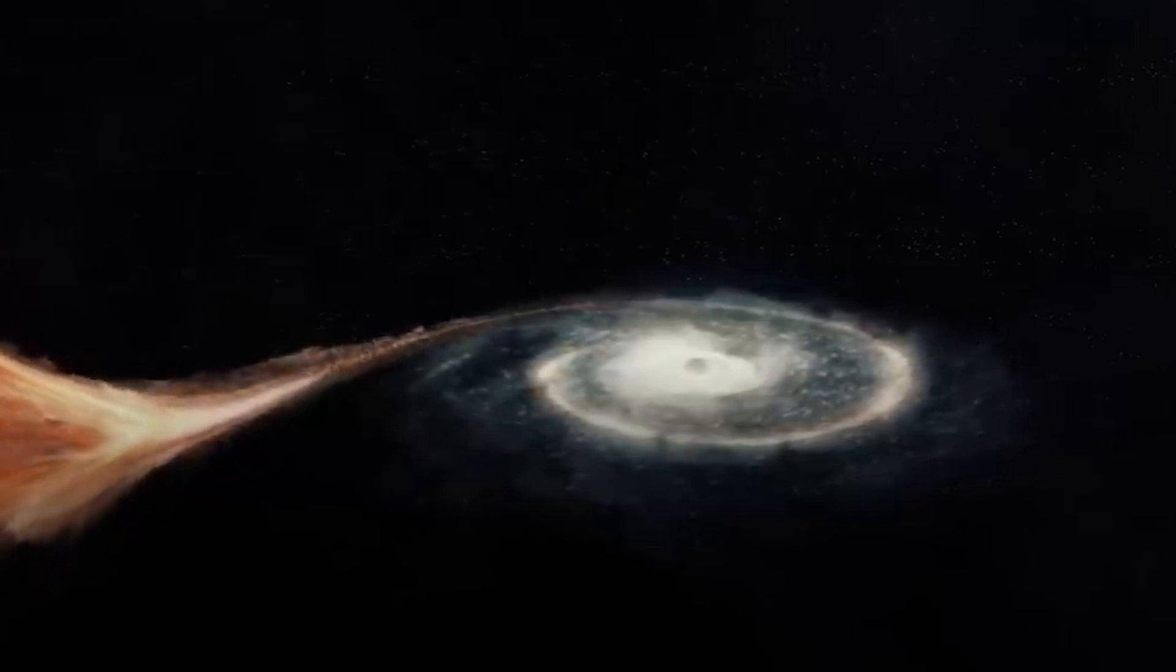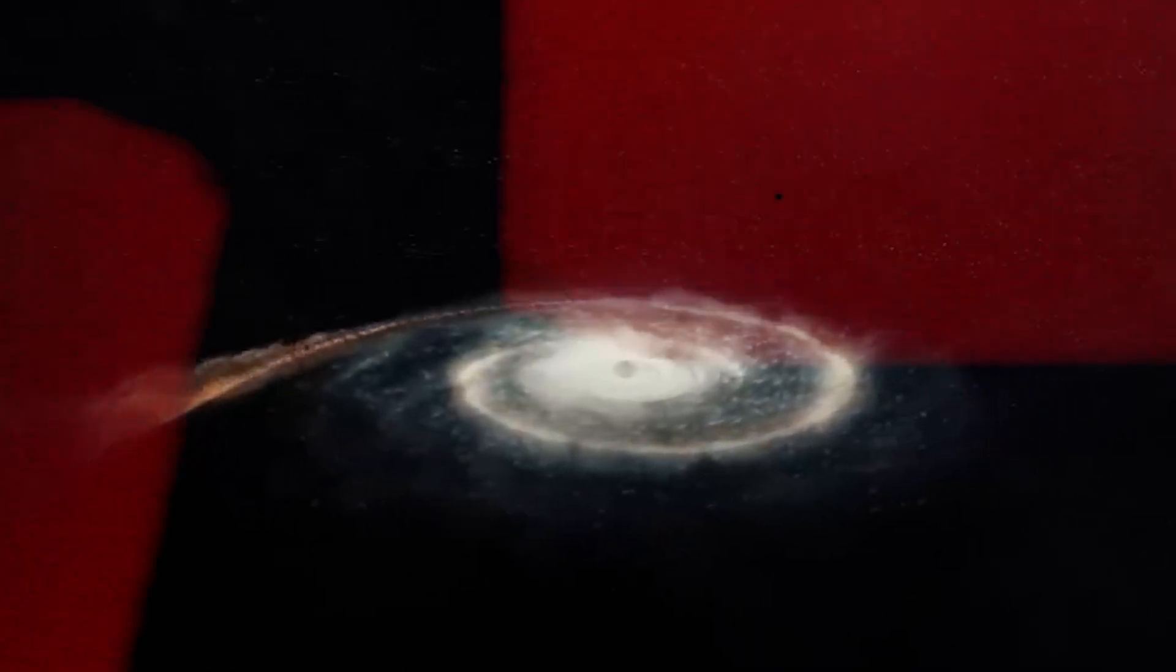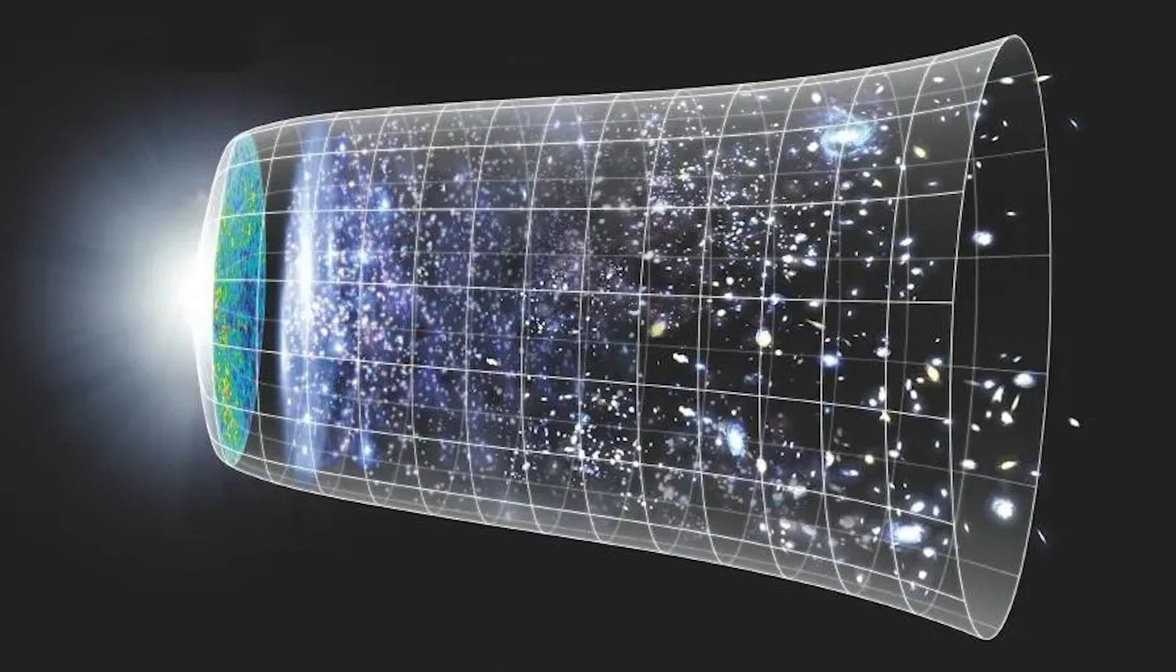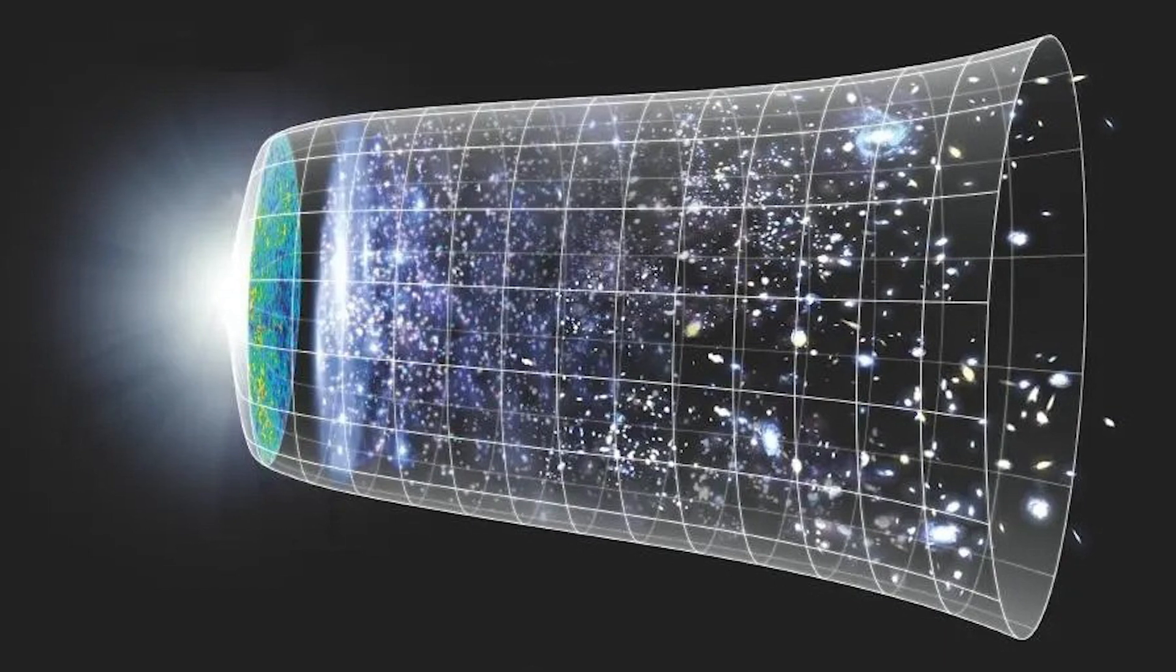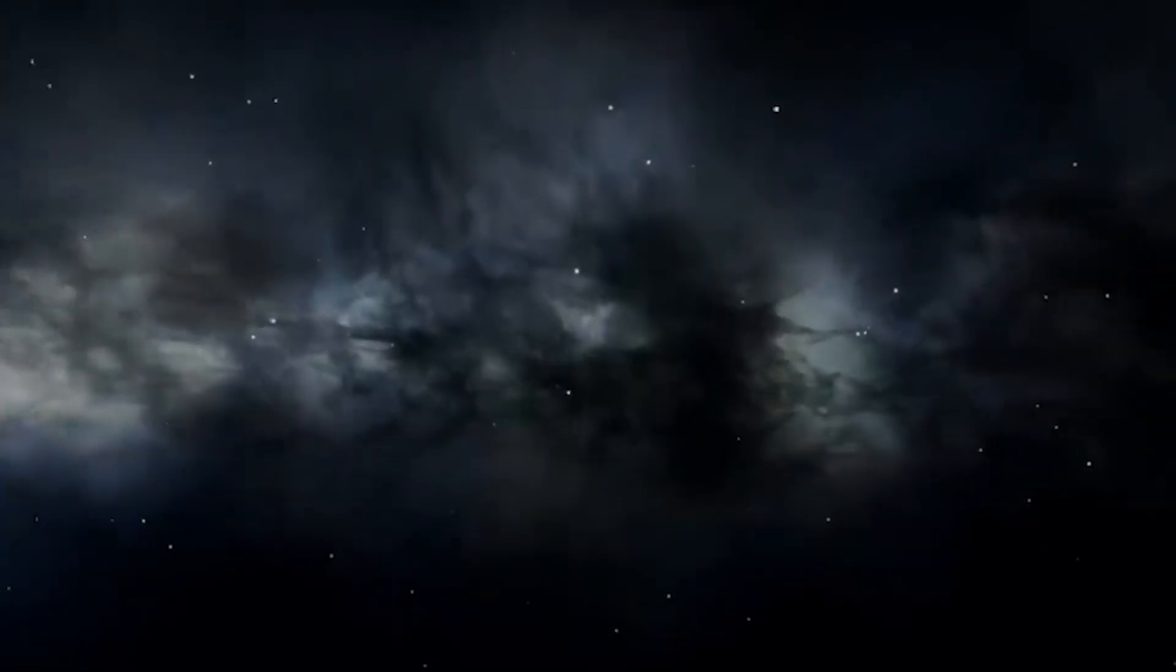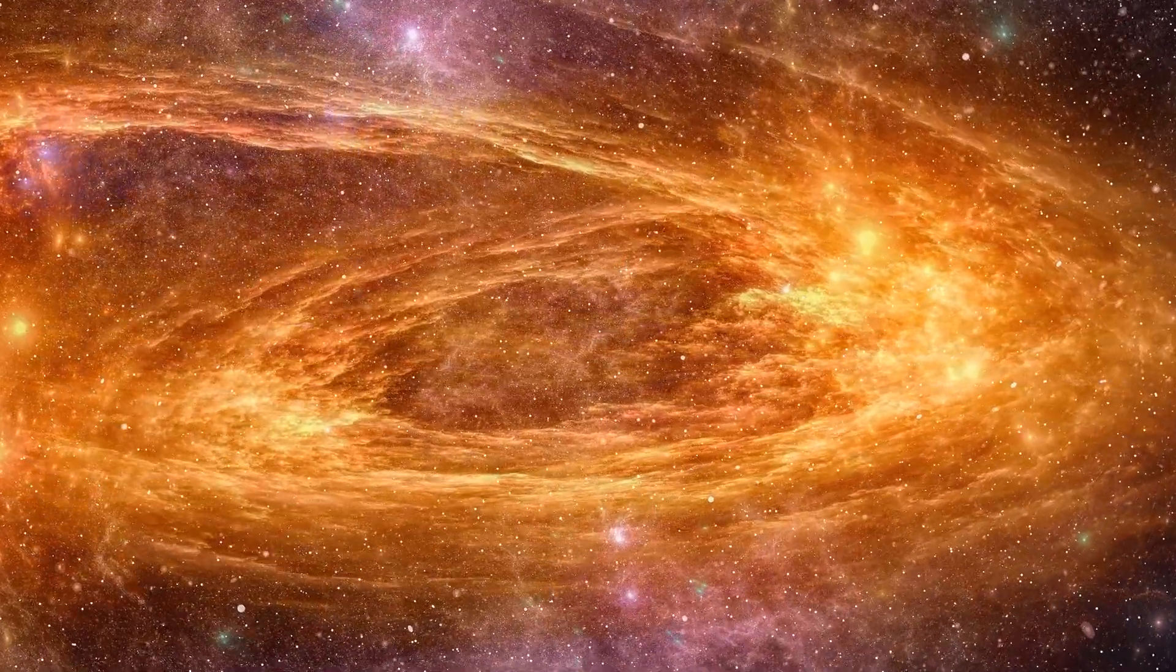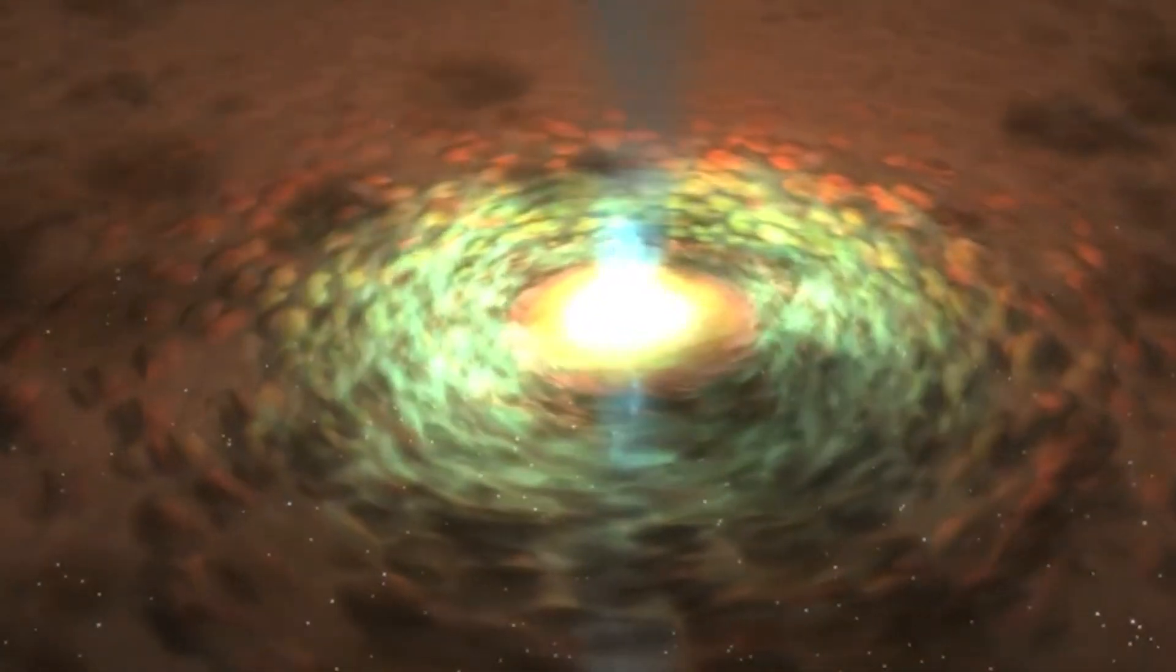This raises a huge question. If we're this wrong about how quickly black holes can form, what else might we be wrong about? The Big Bang Theory itself is starting to show some cracks. It can't explain everything we see, especially when we get down to the really tiny quantum scale. That's where theories like the Big Bounce come in, by treating space and time itself as something that can be quantized. Each universe could give birth to the next, carrying forward seeds of structure that explain these impossibly massive early objects.